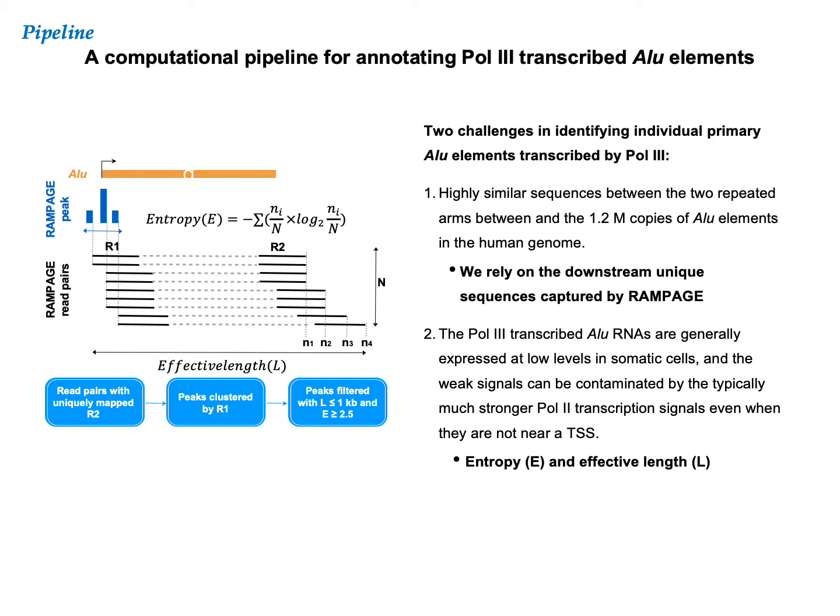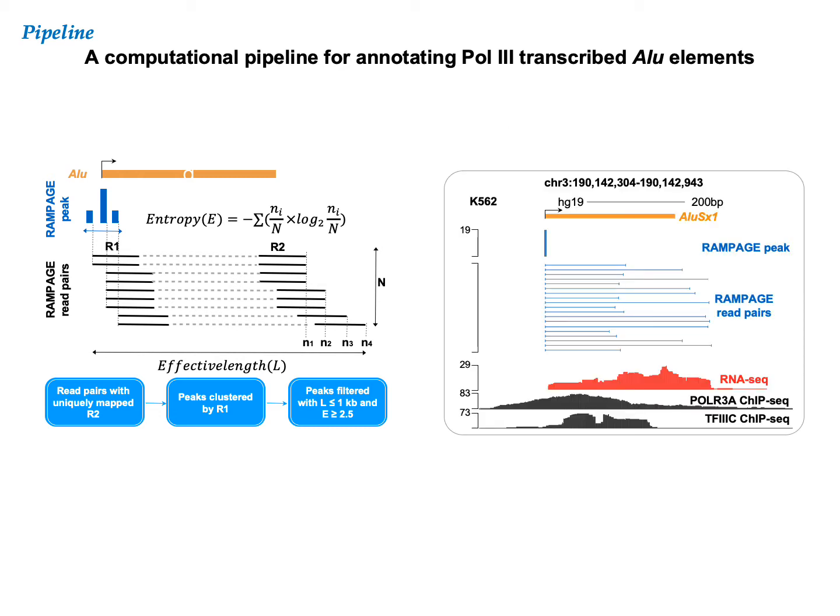Number two, Pol III transcribed Alu RNAs are typically expressed at low levels, and the signal may be contaminated by the typically much stronger Pol II transcription of nearby genes. Our solution is to establish two parameters in our pipeline: the entropy of the reads that map to each Alu locus, and the effective length of the RAMPAGE read pairs. Here is an example of a Pol III transcribed Alu element. Its TSS is annotated by 19 RAMPAGE reads, which end at various locations downstream. This locus is also supported by RNA-seq data and the ChIP-seq data of Pol III components.